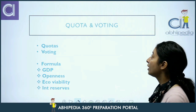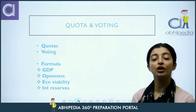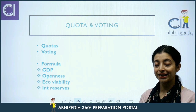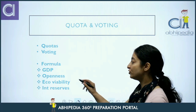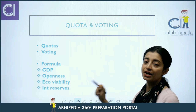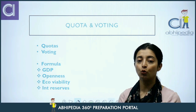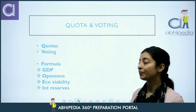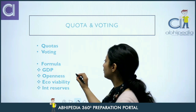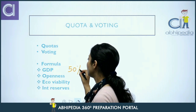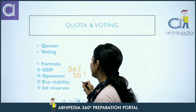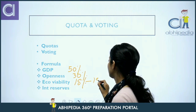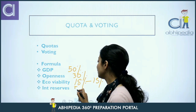Ab hum quota aur voting ki baat karte hain. Board of Governors quota ko decide karta hai based upon four factors: GDP, Openness, Economic Viability, aur International Reserves. Yeh 4 components hain us formula ke. In 4 components ke alag-alag weightage hain: GDP ka weightage hai 50%, Openness ka 30%, Economic Viability ka 15%, aur International Reserves ka 5%. Is basis pe quotas decide kiye jaate hain.